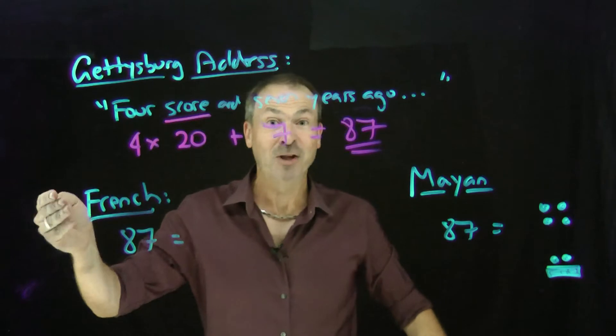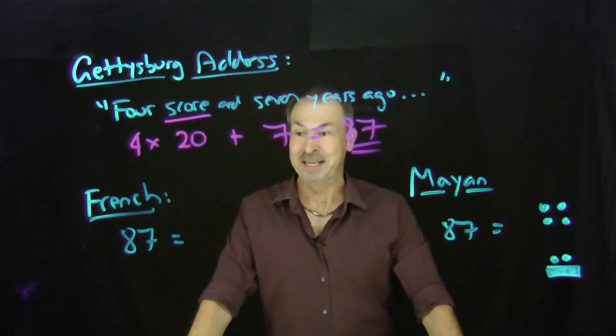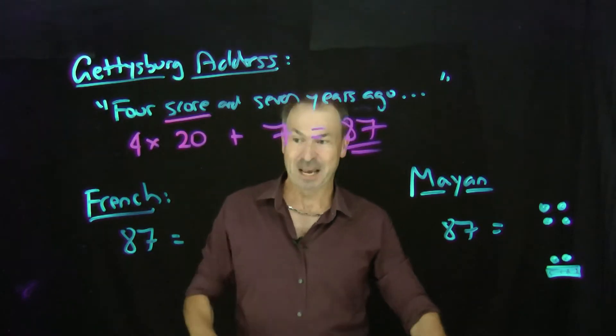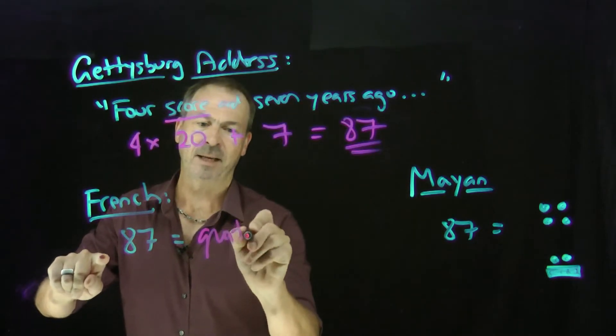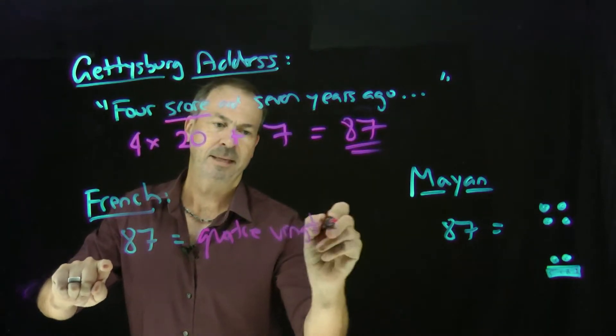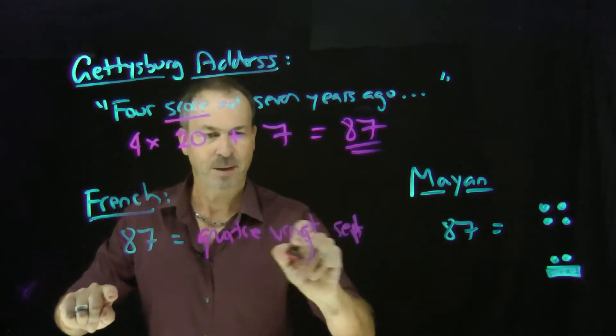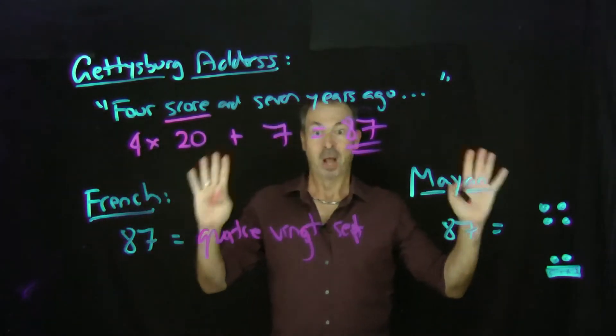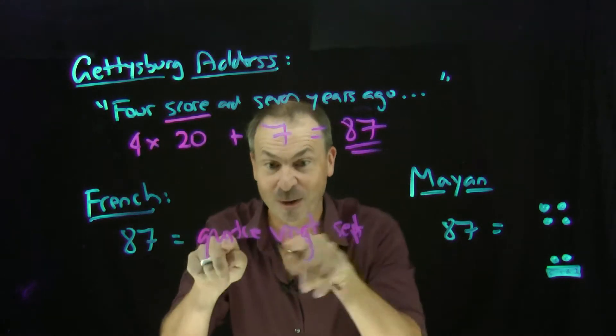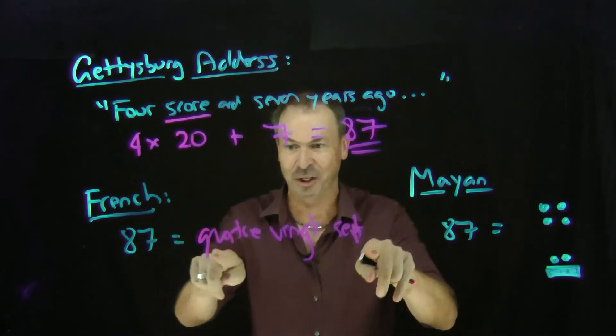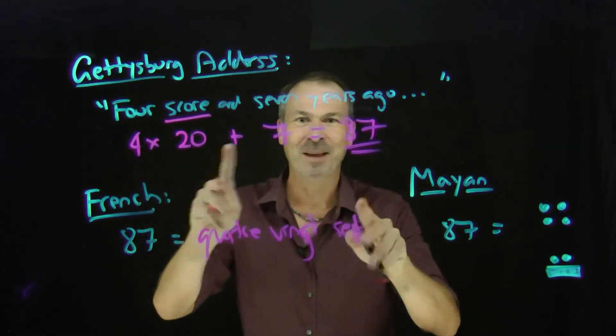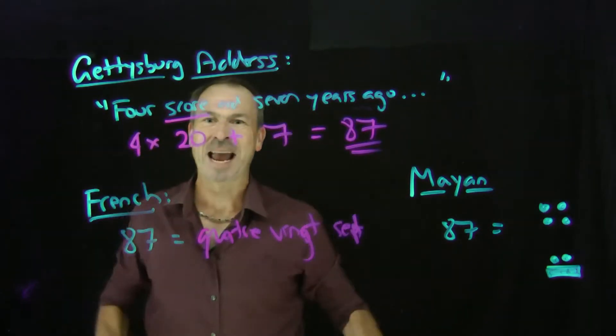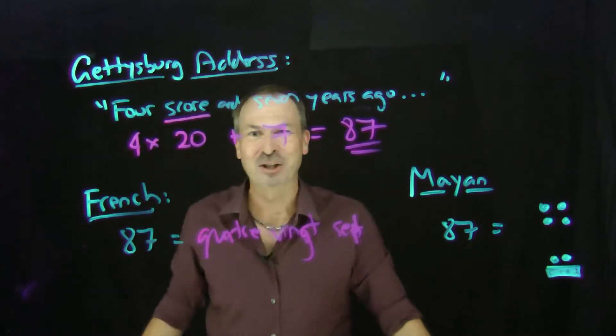In fact, people who speak French also speak base 20 for the number 87. They pronounce the number 87 as, forgive me I don't speak French, but they say quatre vingt sept. If you take what they say and translate them literally into English, they say four twenties and seven. Quatre vingt sept is literally 87 presented in a base 20 sort of way.